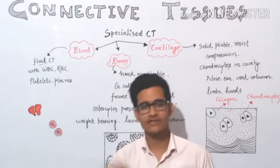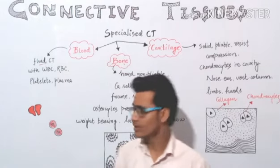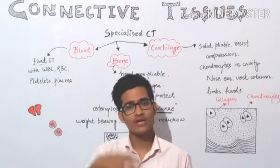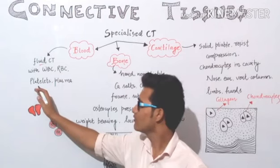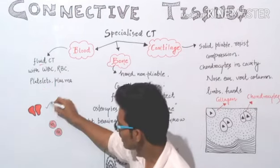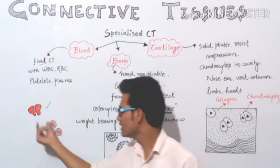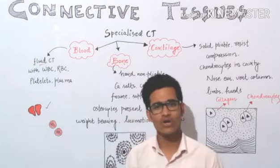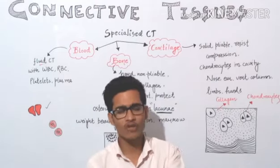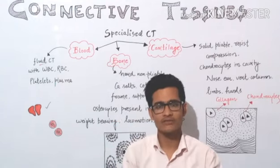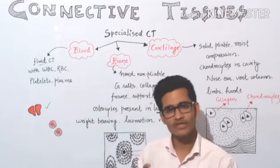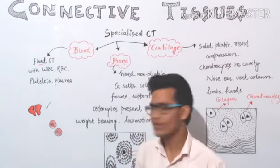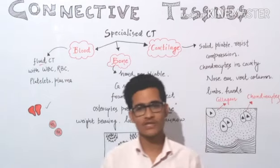Blood has different kinds of cells — blood cells which we have learned about. It will have WBC, that is white blood cells. It will have platelets, which help in blood clotting. The platelet helps in the clotting mechanism, which is very helpful in wound healing and that is mainly due to platelets.